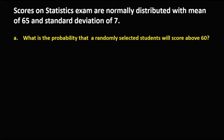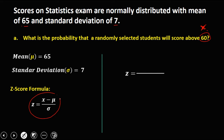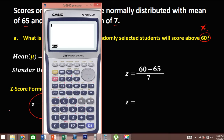What is the probability that a randomly selected student will score above 60? In the problem, the mean is 65 and the standard deviation is 7. To solve for the standard score z, we use z = (x − mean) / standard deviation. Here 60 is the observed value, so we compute: z = (60 − 65) / 7, which gives z = −0.71.